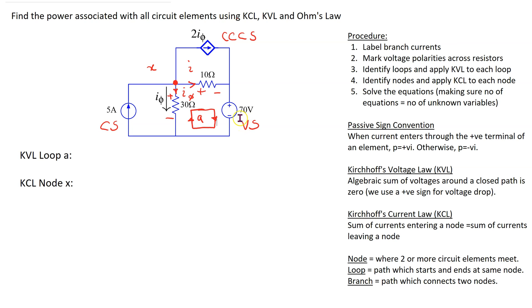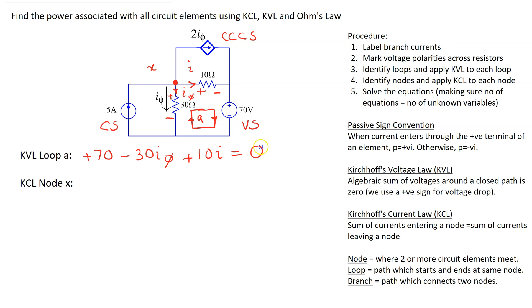Now let's write the circuit equation for loop A starting at the independent voltage source. Going from plus to minus is a voltage drop, so this is written with a positive sign: plus 70. Going from minus to plus is a voltage rise, and using Ohm's law this is minus 30 I_phi. Then going from plus to minus is a voltage drop, so this is plus 10 I equals 0.